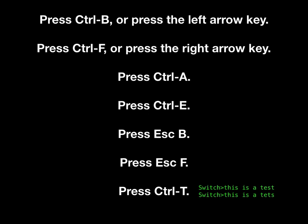Press Ctrl A to move the cursor to the beginning of the command line. Press Ctrl E to move the cursor to the end of the command line. Press Esc B to move the cursor back one word. Press Esc F to move the cursor forward one word. Press Ctrl T to transpose the character to the left of the cursor with the character located at the cursor.